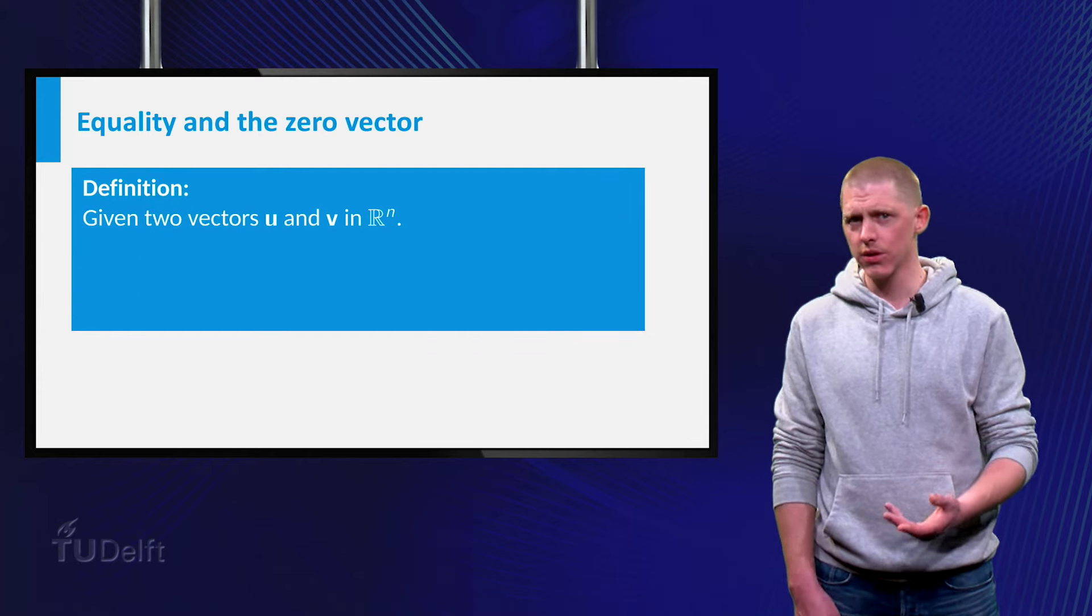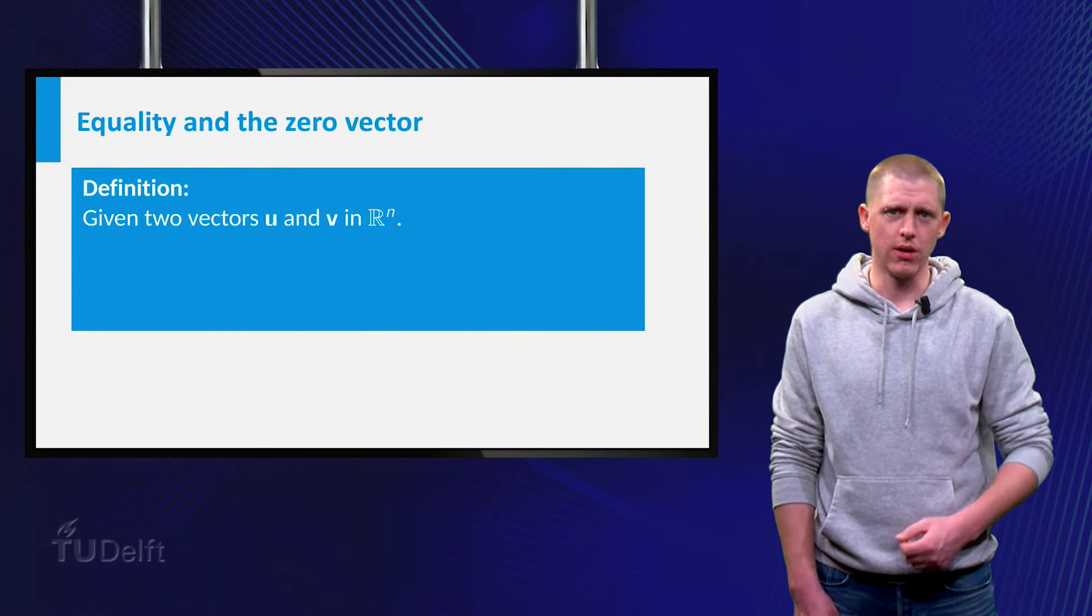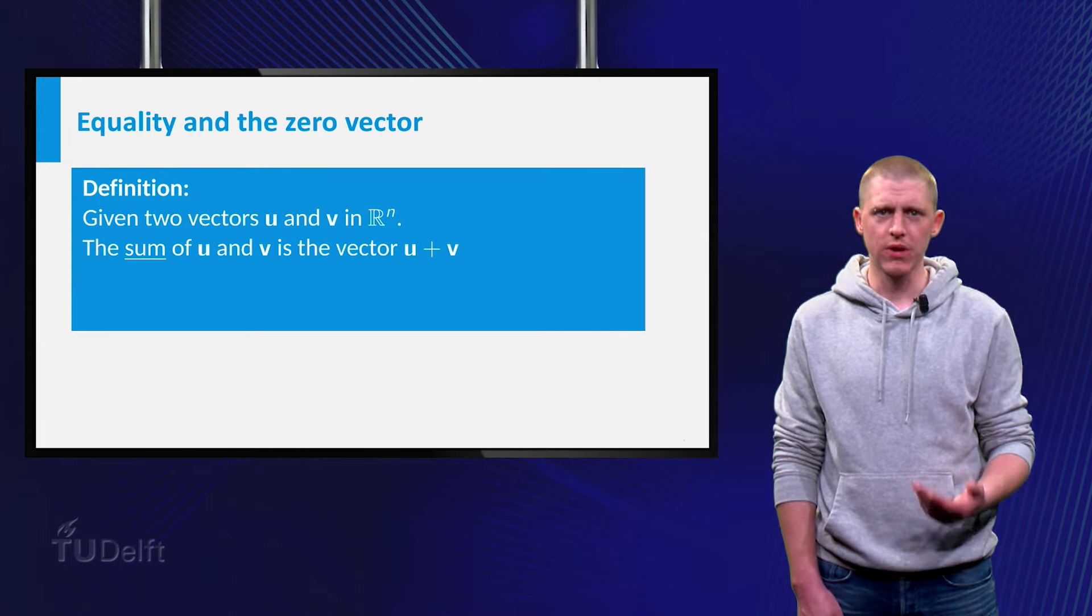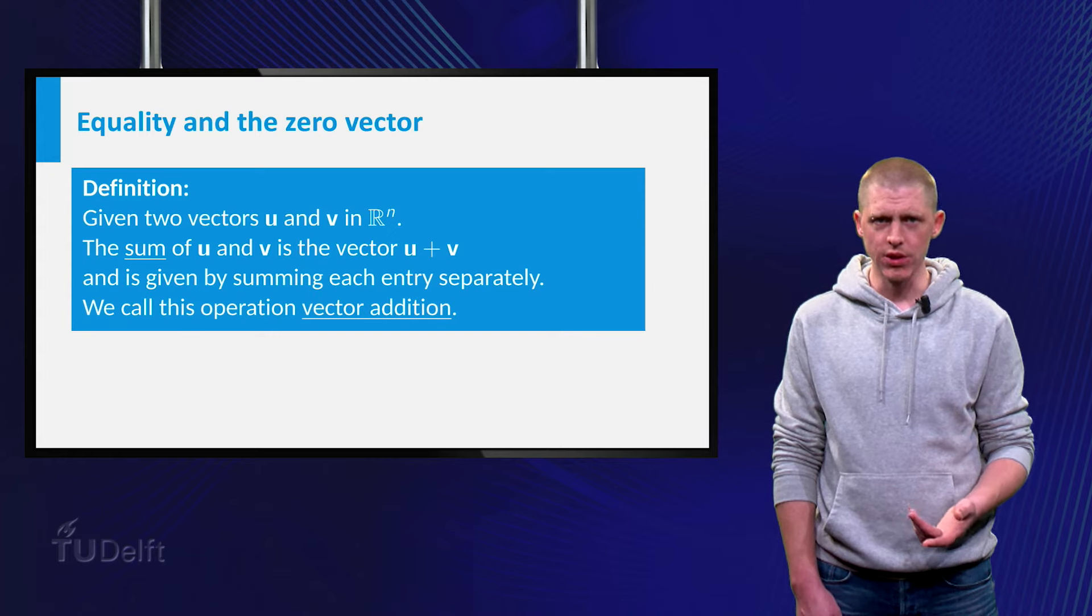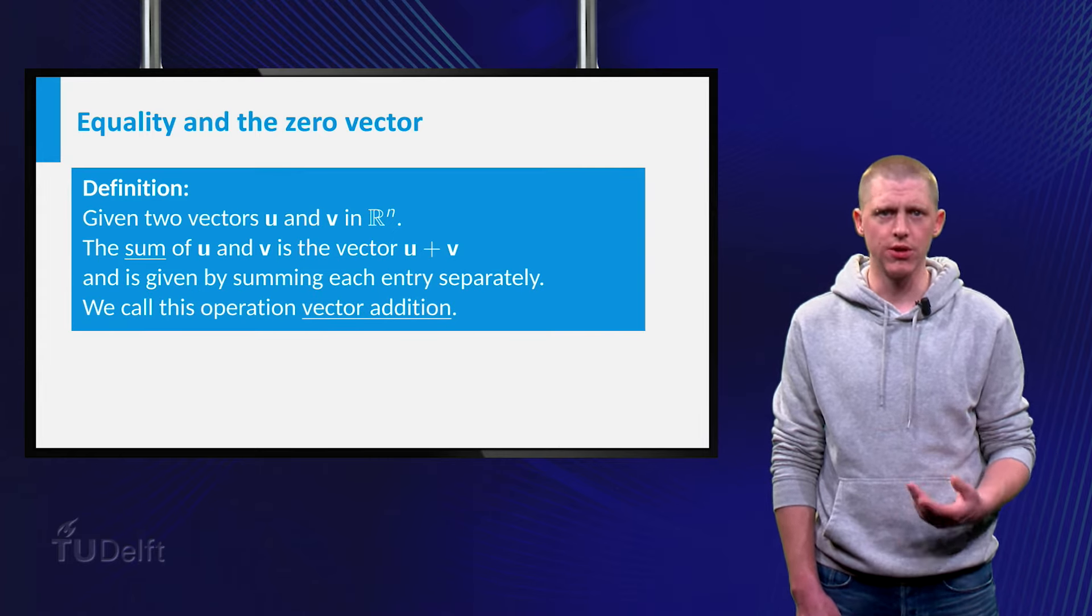Now take two vectors, u and v, both in Rn. You could add these vectors to form the vector u plus v. You do this by adding each entry separately and you call this operation vector addition.